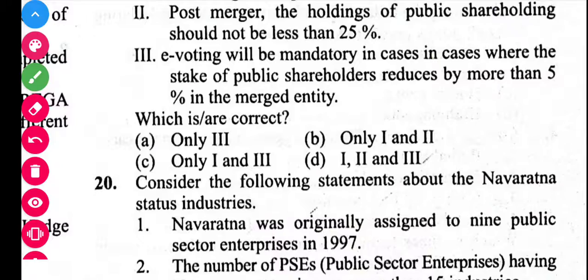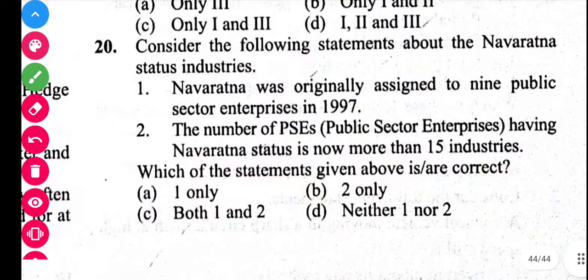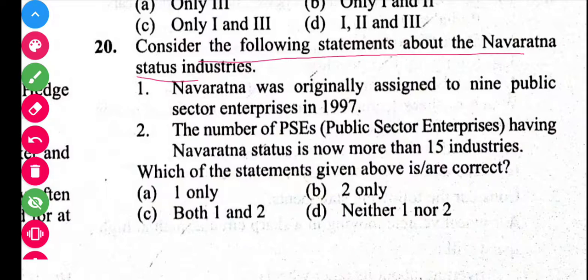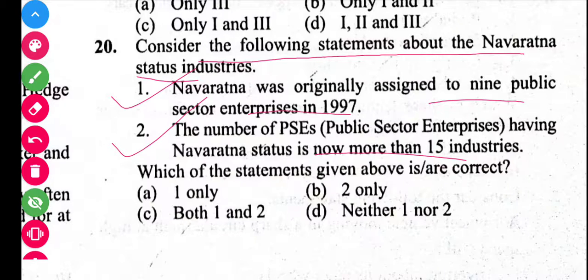The last question is related to Navratna companies. Navratna status was originally assigned to 9 public sector units in 1997. The number of PSUs having Navratna status is now more than 15. Both statements are correct, so the answer is C.